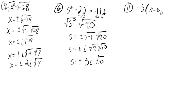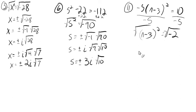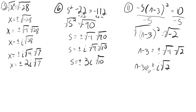Negative 5 times the quantity n minus 3 squared equals 10. We'll remember from the last section that if we can get this parenthesis, which is squared, on one side by itself, we can take the square root and get closer to the solution. We'll divide by negative 5, so we get n minus 3 squared equals negative 2. Taking the square root of both sides, n minus 3 equals plus or minus the square root of negative 1 times the square root of 2. So we add 3 to both sides to get n equals 3 plus or minus i times the square root of 2.